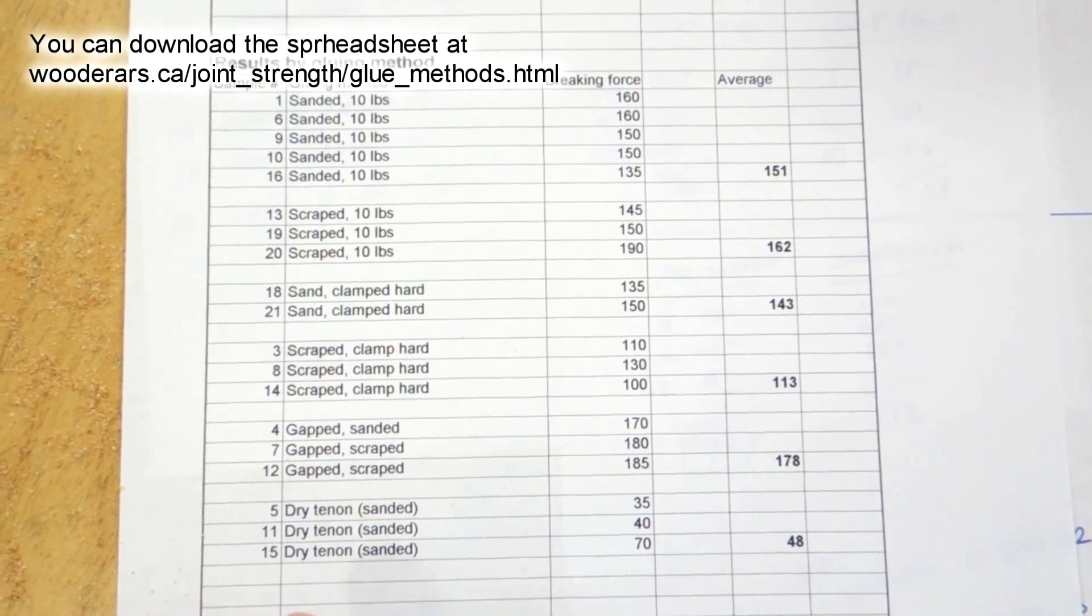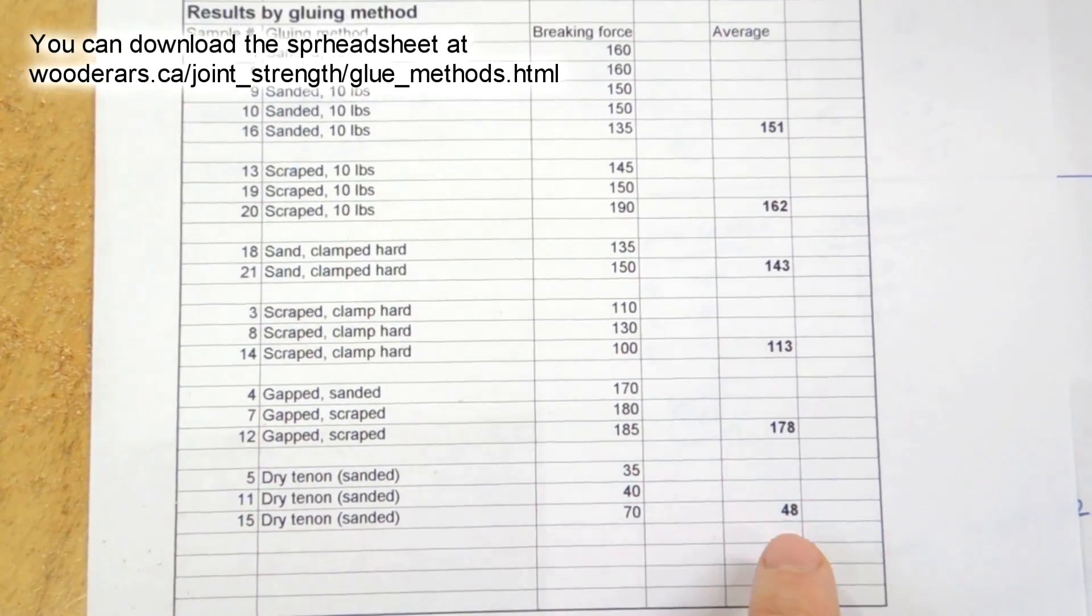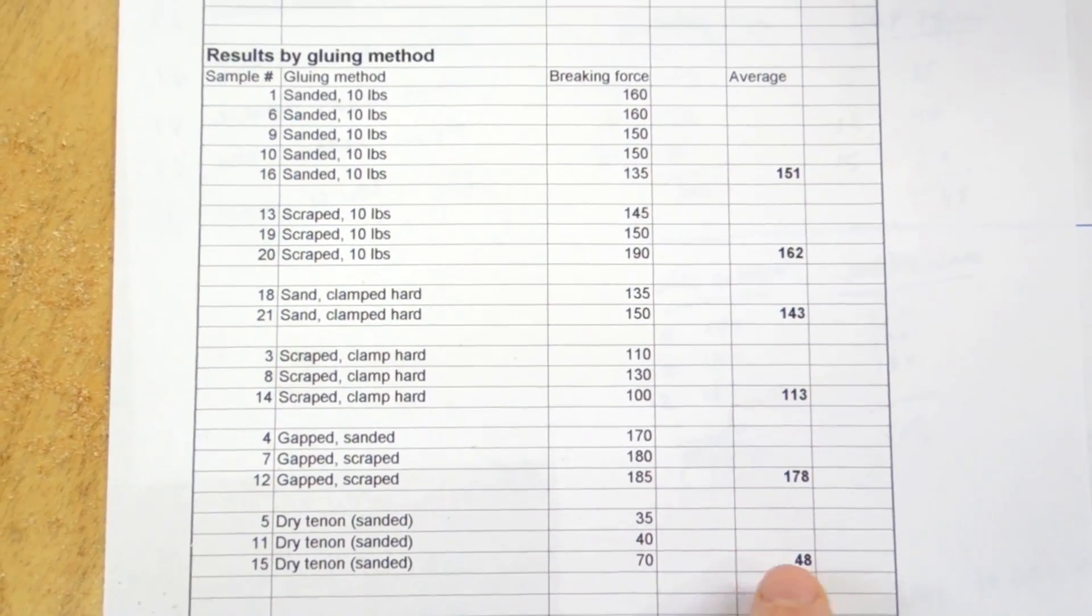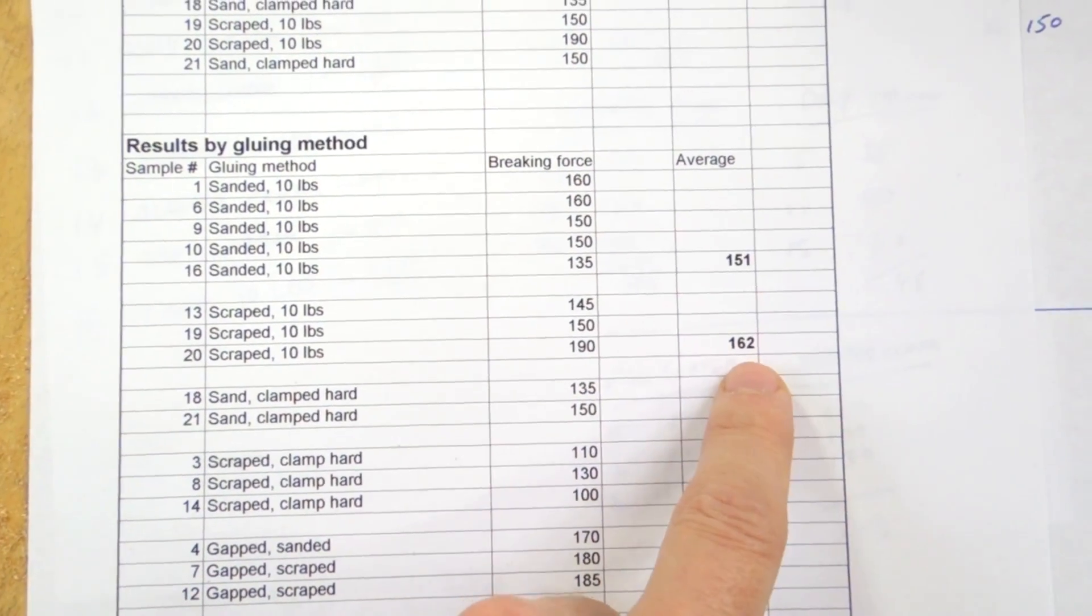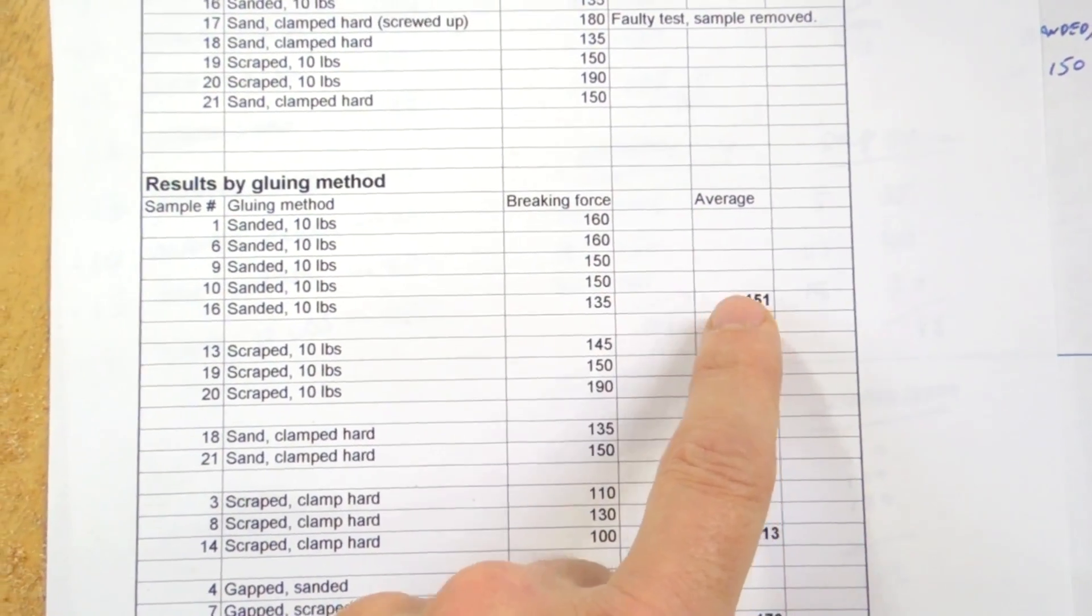So not unexpected. The tenon with no glue on it was much weaker than the other joints. Sanded or scraped didn't make a huge difference. Surprisingly, the scraped ones were slightly stronger than the sanded ones.